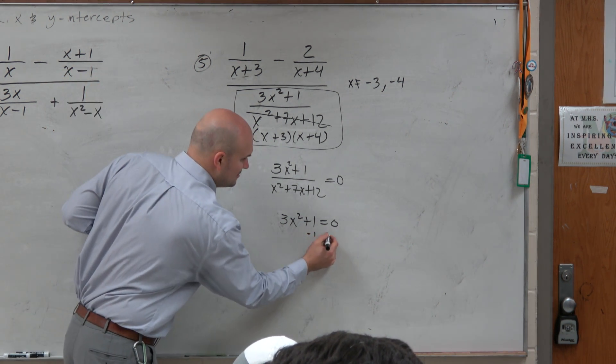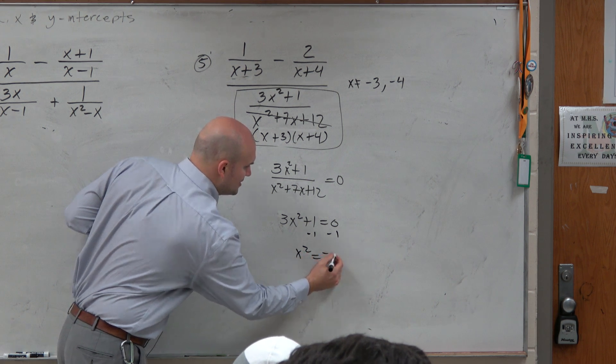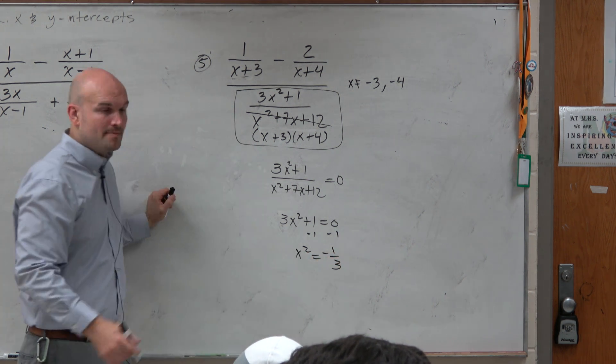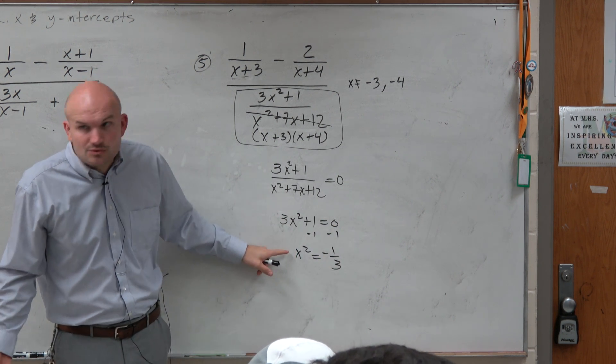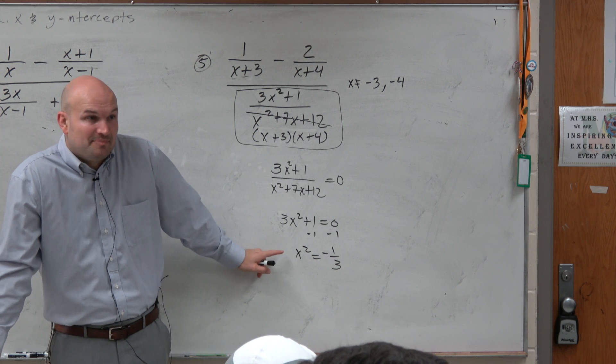Complex number? Yep. Question? So when you go ahead and subtract and divide by 3, you get negative. Well, can you take the square root of a negative number? No. So it's going to be a complex number.